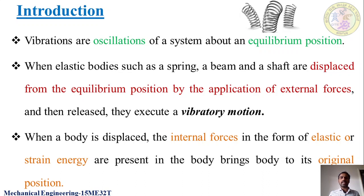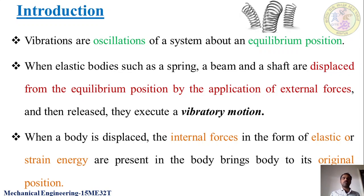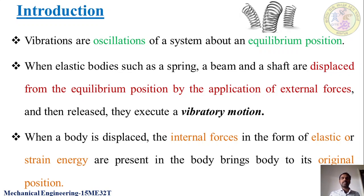Elastic bodies such as a spring, a beam, or a shock absorber, upon the application of external forces, will be displaced from the equilibrium position and will oscillate about the equilibrium position - such motion is said to be vibratory motion. When these elastic bodies are displaced, the internal forces present in the form of elastic or strain energy try to bring the body back to its original position.